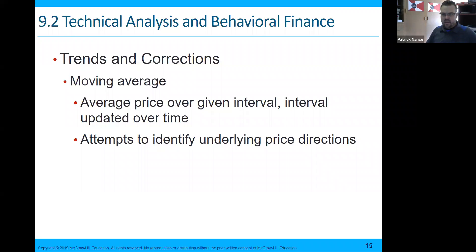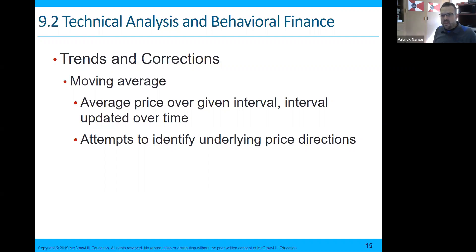Technical analysis and behavioral finance — trends and corrections. A moving average is an average price over a given interval, and the interval is updated over time. This attempts to identify underlying price direction.